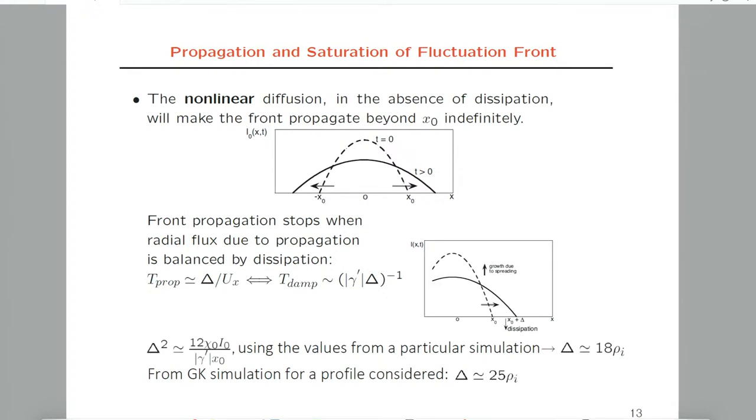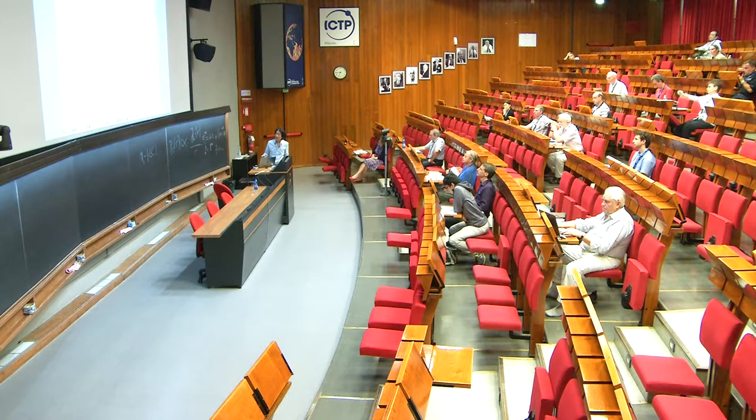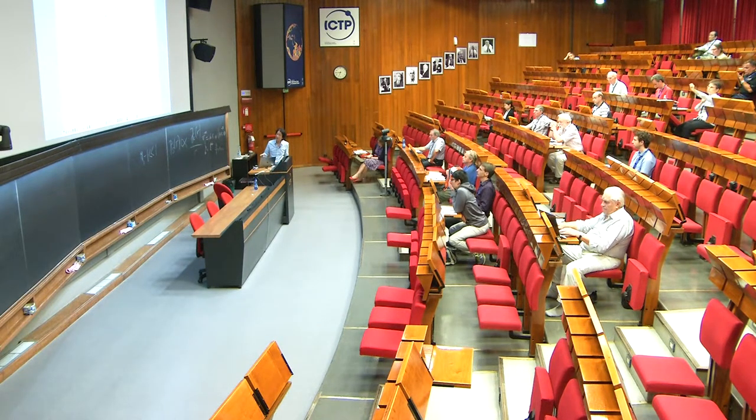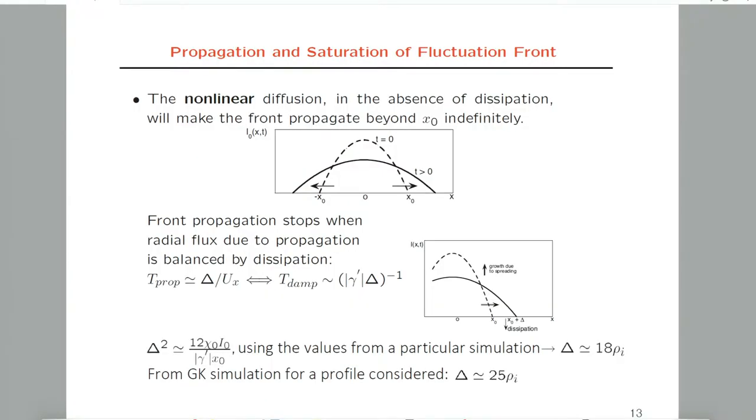From the previous slide, I showed you that only from dimensional analysis we can find the propagation time of a turbulent patch into the linearly stable zone goes like radial extent of turbulence spreading divided by radial group velocity. This should be balanced when the turbulence gets damped by the linear damping rate or dissipation. Damping rate gets higher and higher as you go deeper into the linearly stable zone, so I Taylor expanded the linear damping rate.